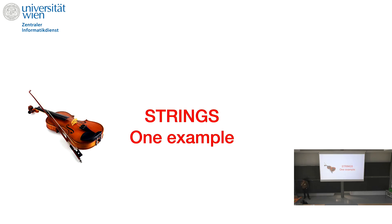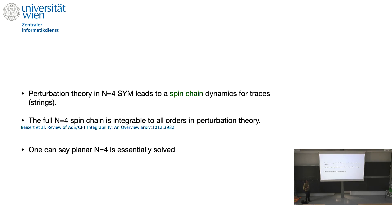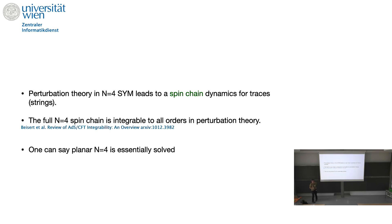The title is "Strings, Young Diagrams, and All That." Let's start with strings. By now it's well known that perturbation theory in N=4 Yang-Mills leads to spin chain dynamics of traces. The full N=4 spin chain is integrable to all orders in perturbation theory. I don't think we can ever have a mathematical proof of that directly because it requires computing planar diagrams, but all the evidence is overwhelming — you use integrability to make five, six, seven loop predictions and they come out in direct computations. I'm citing the review mostly because there are over a thousand papers on this.